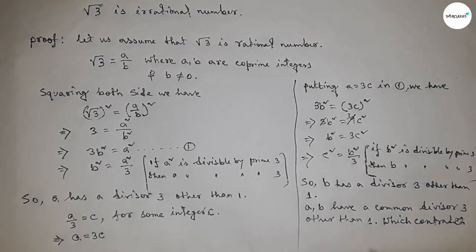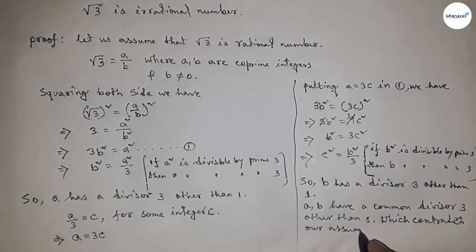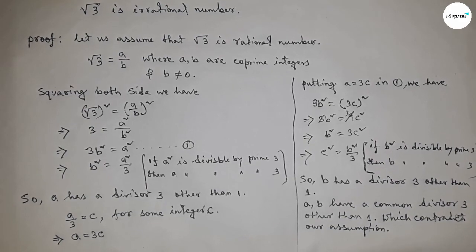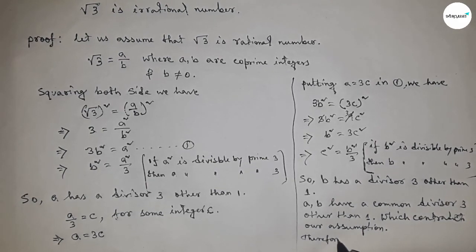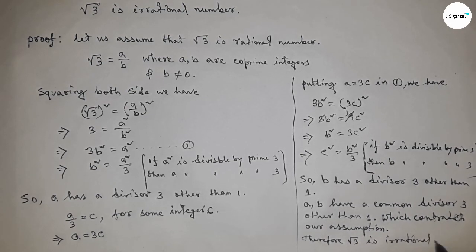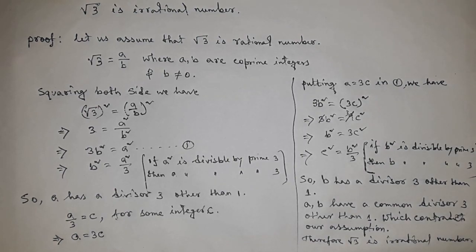This contradicts our assumption because we first assumed a and b are co-prime, meaning they have only one common divisor. So our assumption that root 3 is a rational number is wrong. Therefore, root 3 is not a rational number — root 3 is an irrational number. That's all, thanks for watching. Please subscribe, like, and comment.